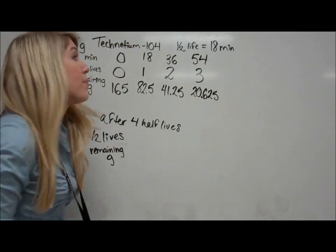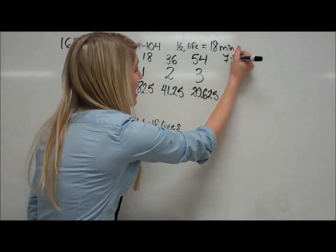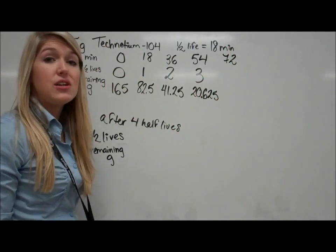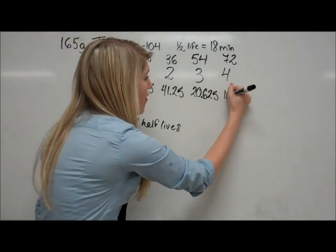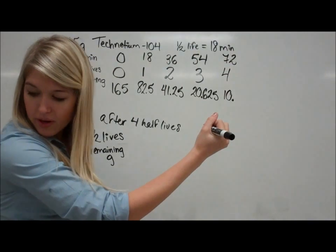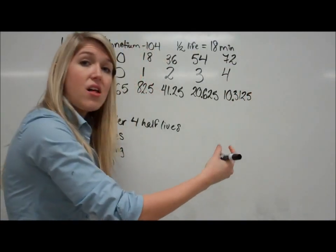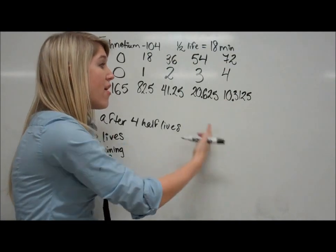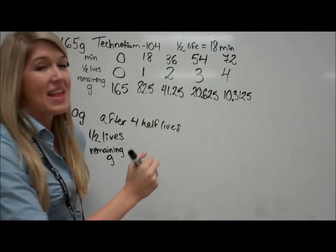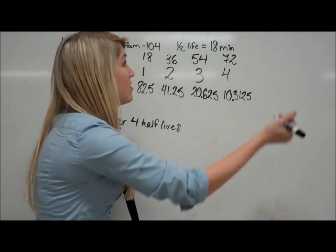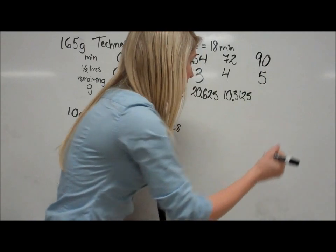We need to go a couple more. We're still not to 90 minutes. So if we add 18 more, that gets us to 72 minutes. That's now the fourth half-life. And now we have 10.3125. Again, all I'm doing is taking half of whatever the number before was each time. Last half-life. We're going to 90 minutes. So 18 more minutes gives us 90. That's the fifth half-life.